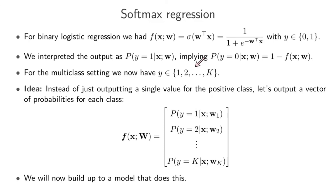The idea behind softmax regression is that instead of outputting a single value as in binary logistic regression, the model outputs a vector. The vector is structured so that the first element gives the probability of being in the first class, the second element gives the probability of being in the second class, and so on up to the kth element, which gives the probability of being in the kth class. That's the fundamental idea behind softmax regression.